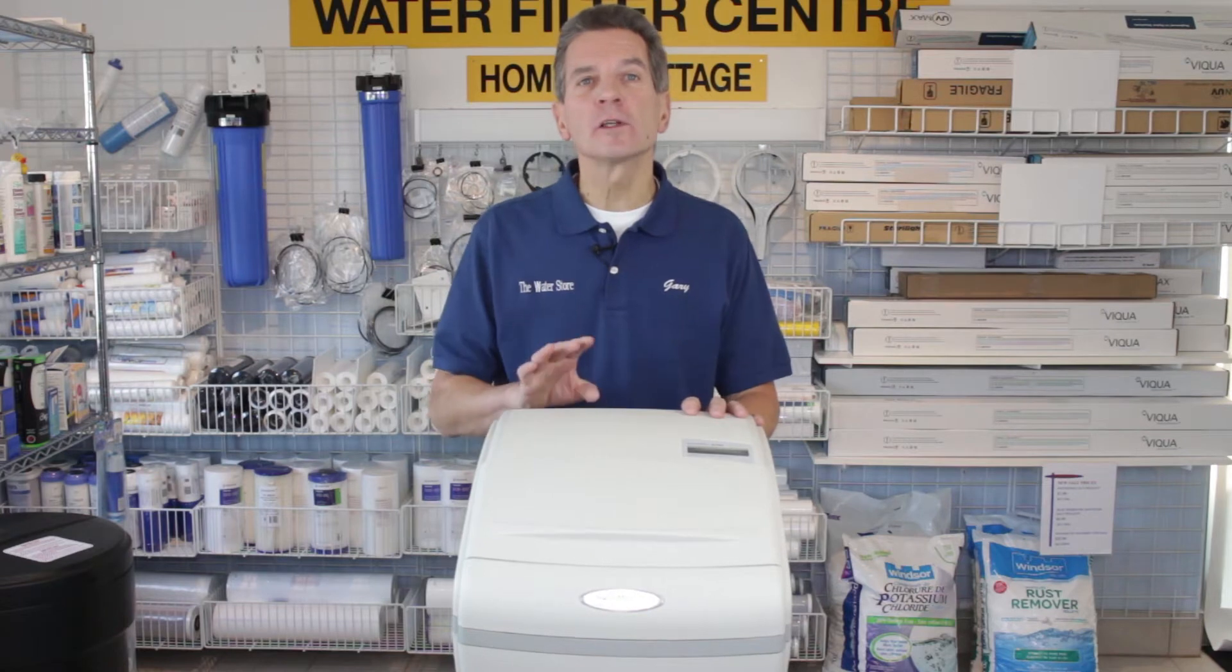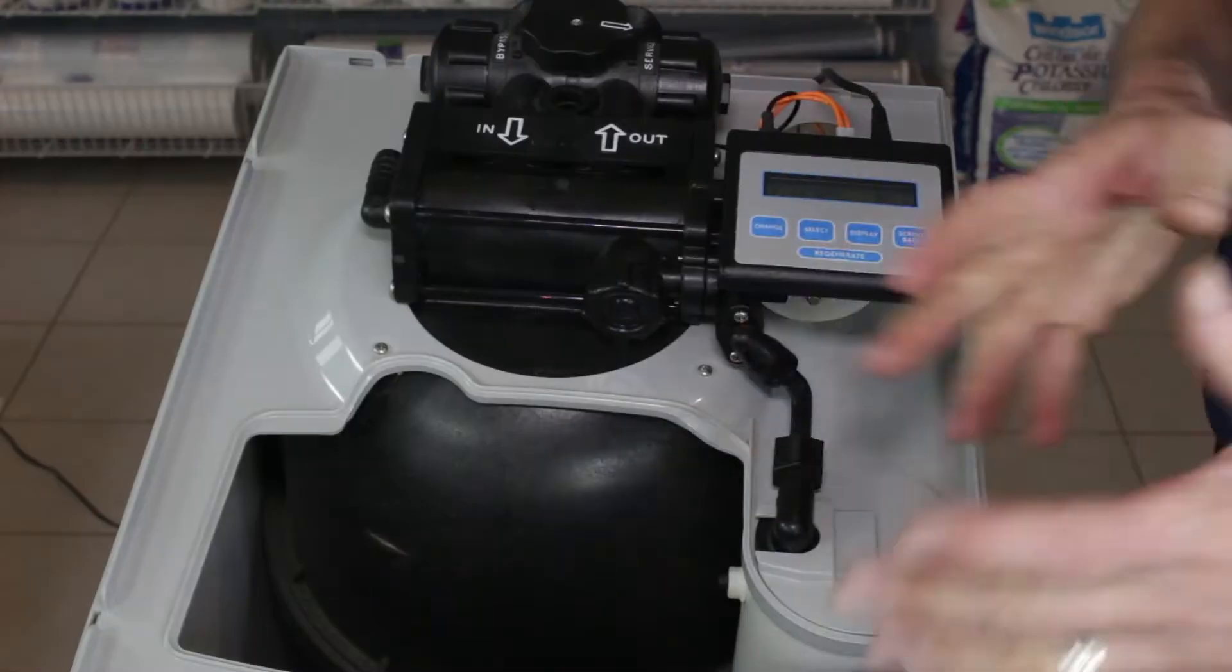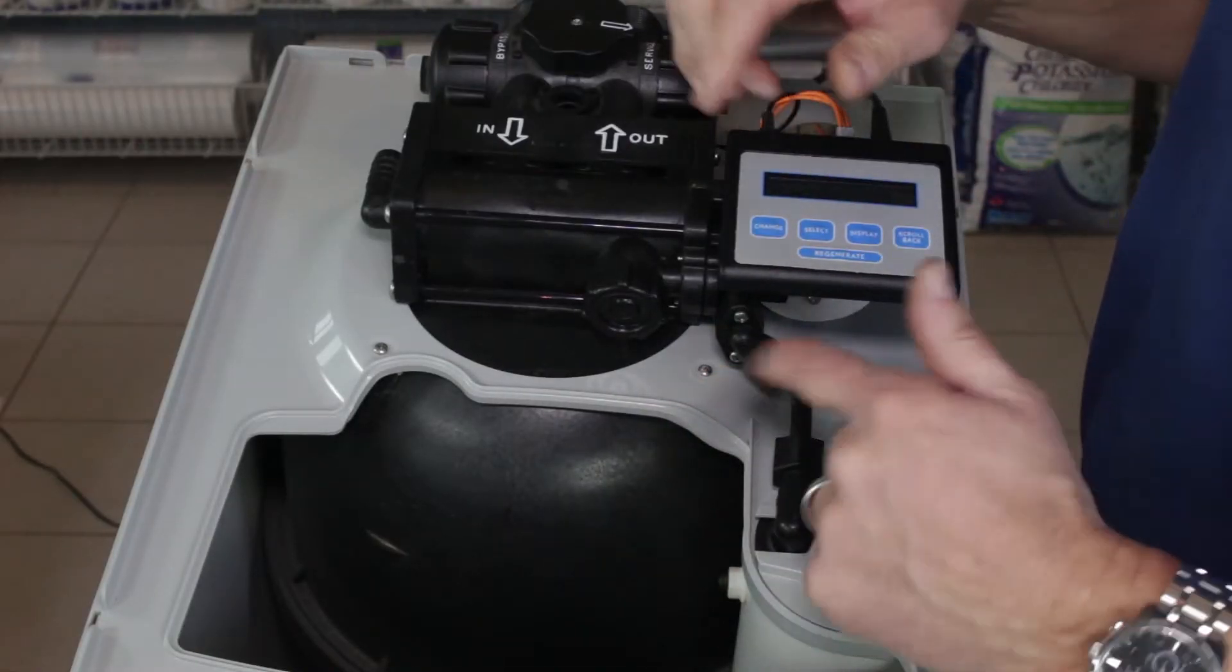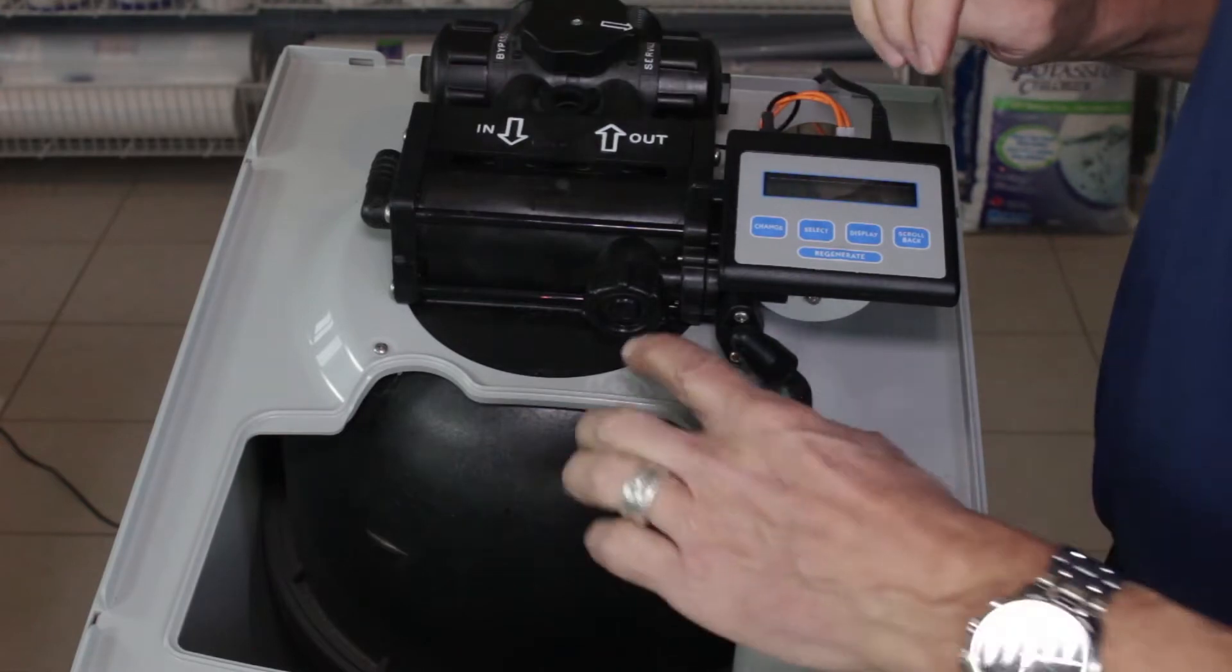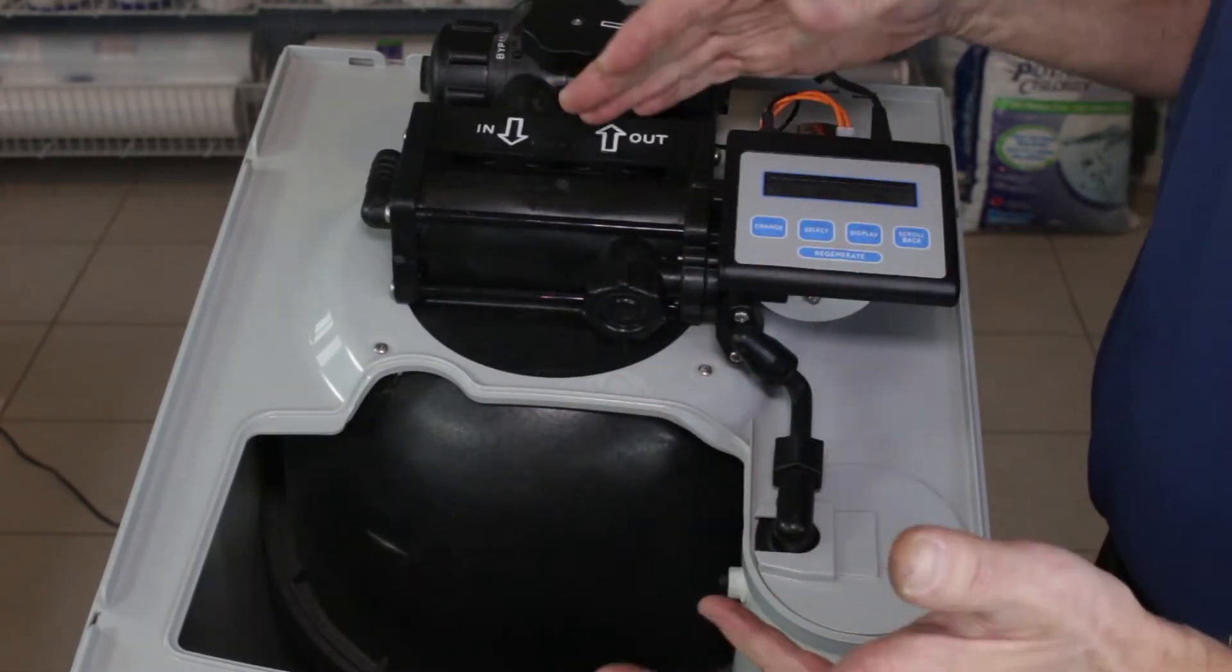Specifically, we're talking about how to clean the flow control and the brine piston. Troubleshooting may have indicated an issue with the brine piston, and it's inside here so it needs to be cleaned out.